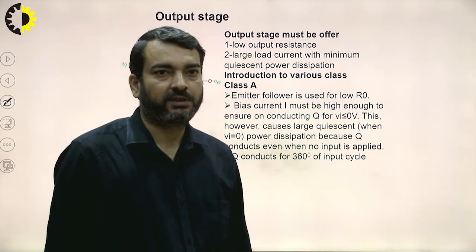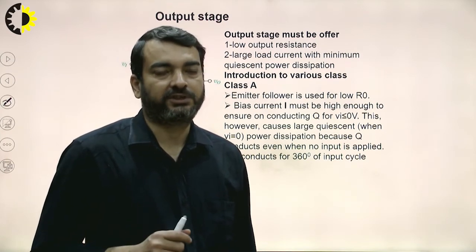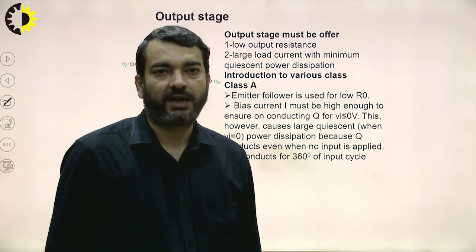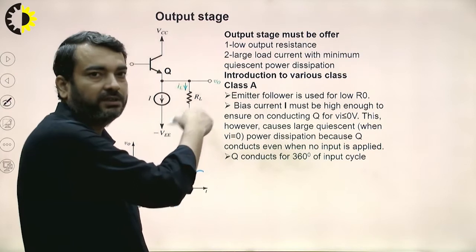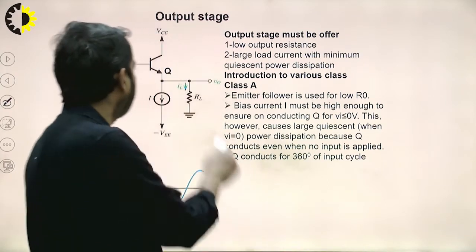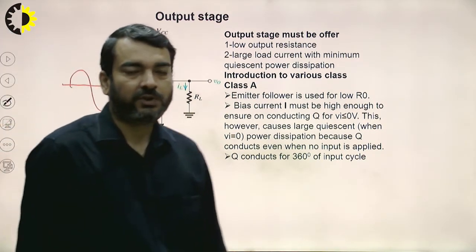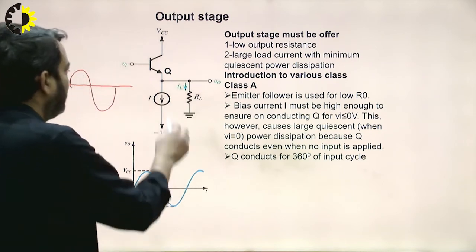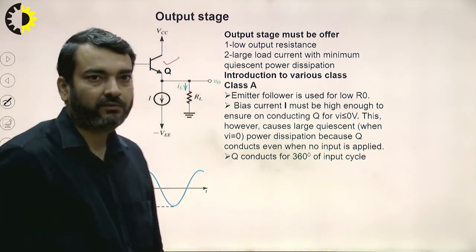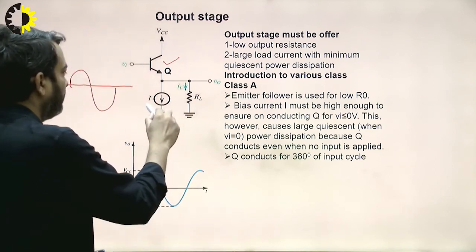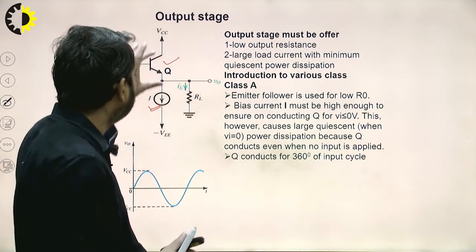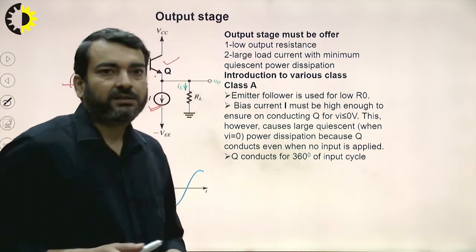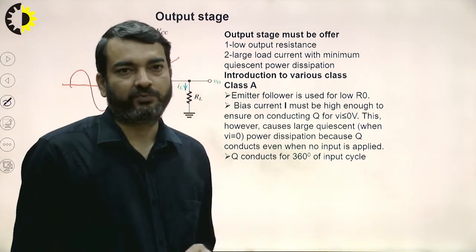Coming to the output stage: a class AB output stage is used. Before going into the details of class AB, let us first understand class A, class B, and then class AB. In a class A output stage, we must ensure that the transistor Q remains in active mode for both positive and negative halves of the input. For this, a bias current I is used so that the transistor remains on even when no input is applied, resulting in very high quiescent power dissipation.